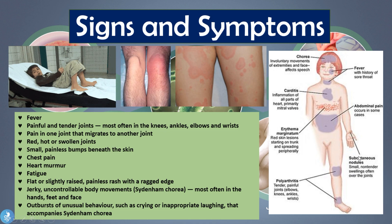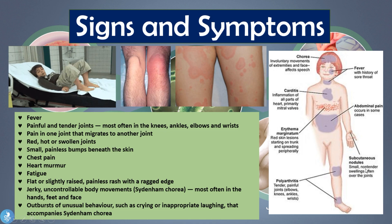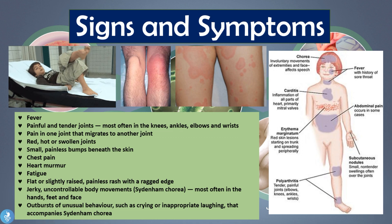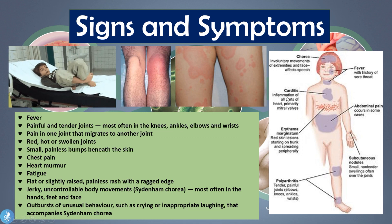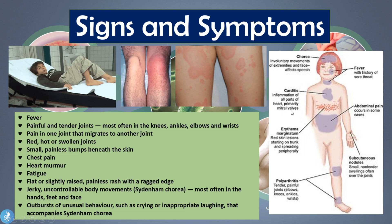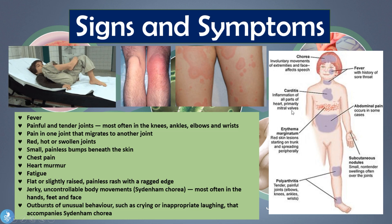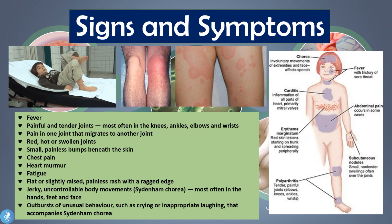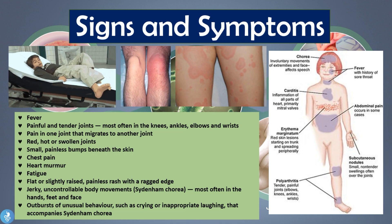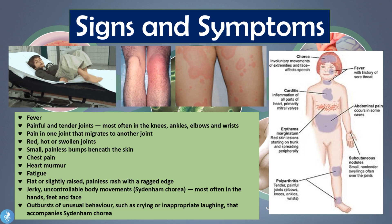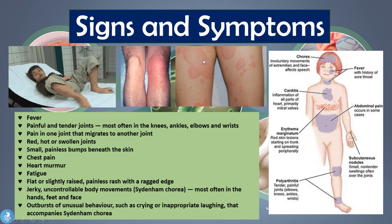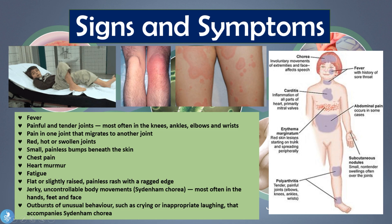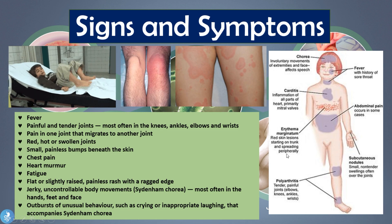Patients may also develop small painless bumps beneath their skin called subcutaneous nodules — small non-tender swellings often over the joint spaces. They may also have chest pain due to carditis and inflammation of all parts of the heart, primarily the mitral valves, and may develop a heart murmur, usually mitral stenosis, as well as fatigue. A flat or slightly raised painless rash with a ragged edge called erythema marginatum appears as red skin lesions starting on the trunk and spreading peripherally.